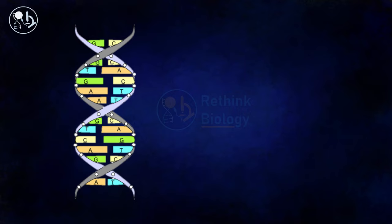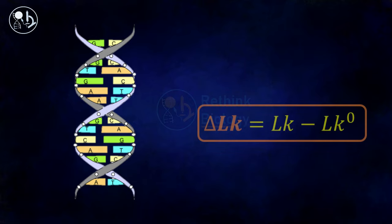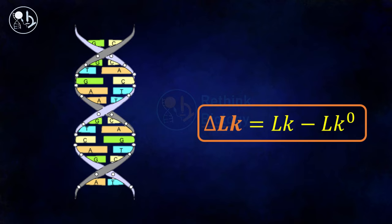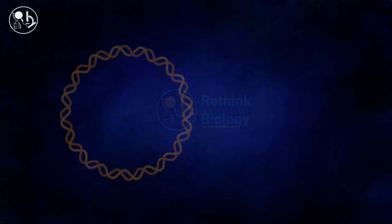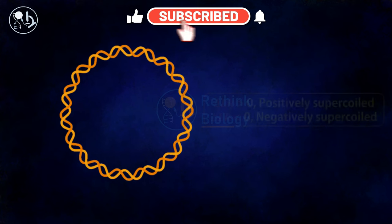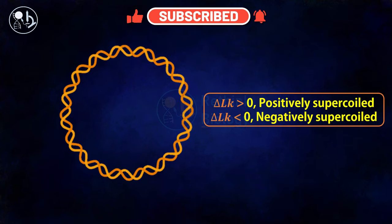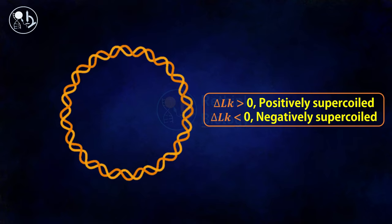DNA within the cell is negatively supercoiled. The extent of supercoiling is measured by the difference between Lk and Lk0, which is called the linking difference. The DNA is called negatively supercoiled if the delta Lk is less than zero, and it will be called positively supercoiled if the delta Lk is greater than zero.